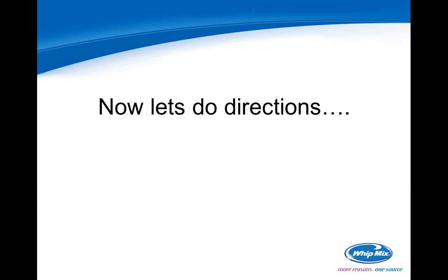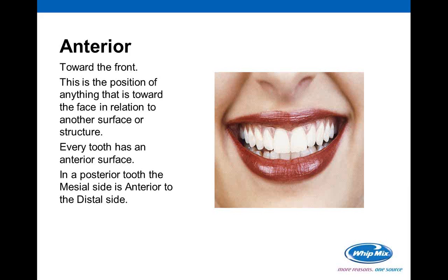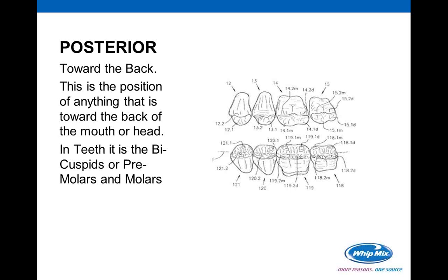Now let's cover directional terms. Anterior means towards the front of the face or mouth — every tooth has an anterior surface. Posterior means towards the back of the mouth or head. When we say the posterior teeth, we're usually talking about the bicuspids or premolars and molars.